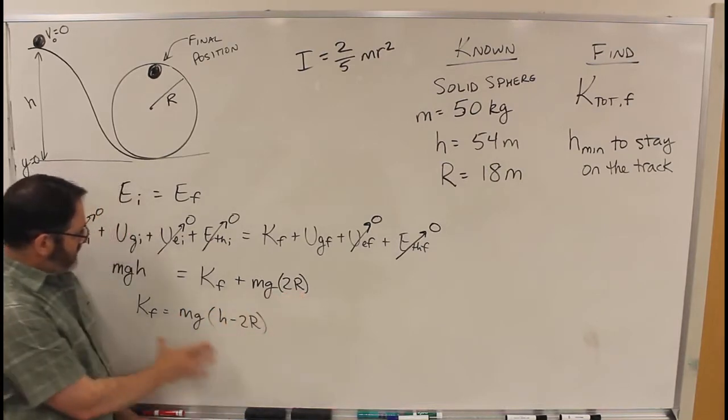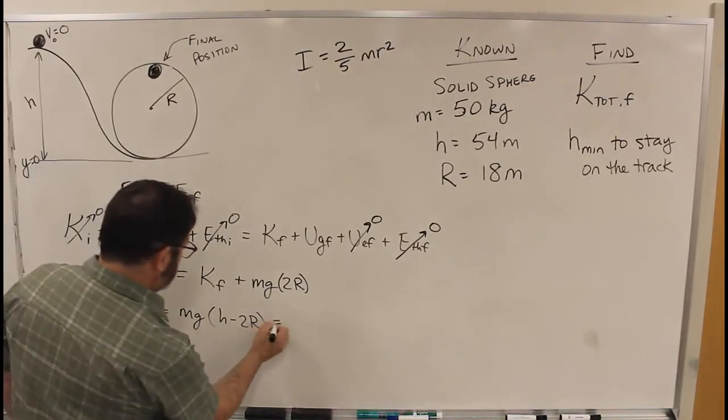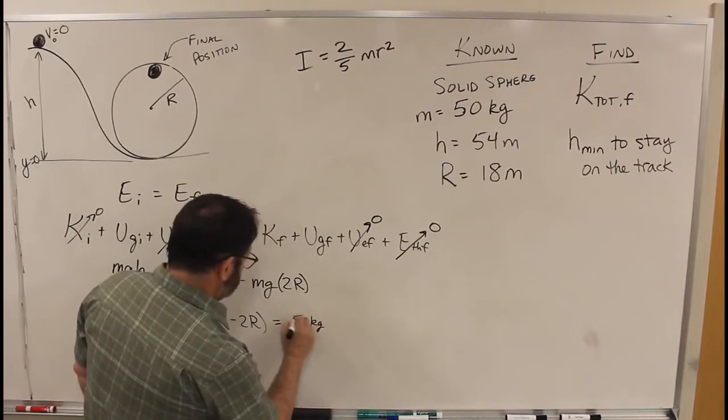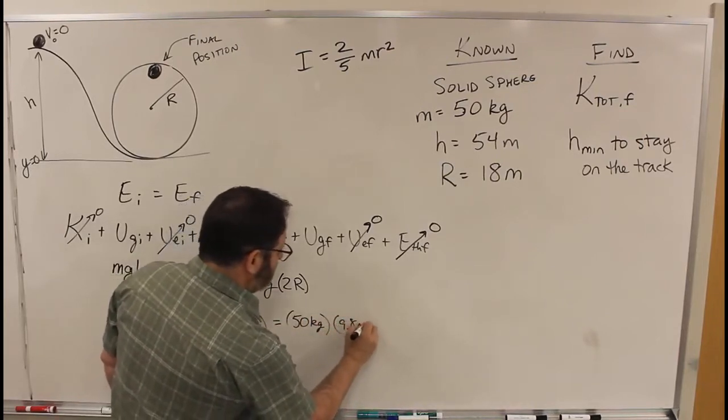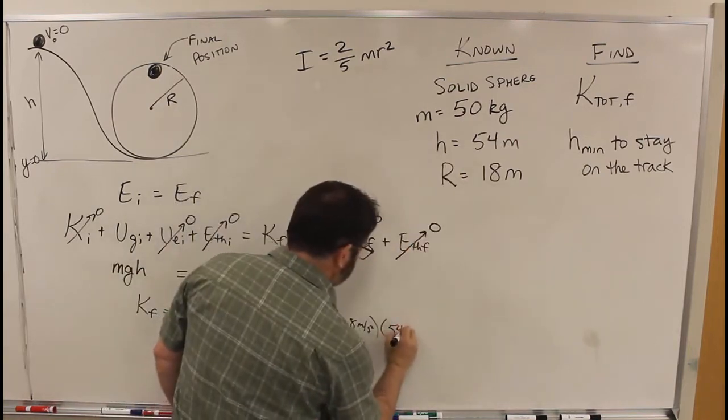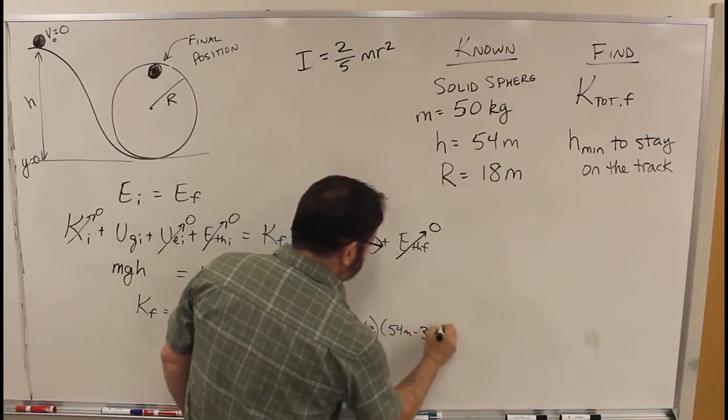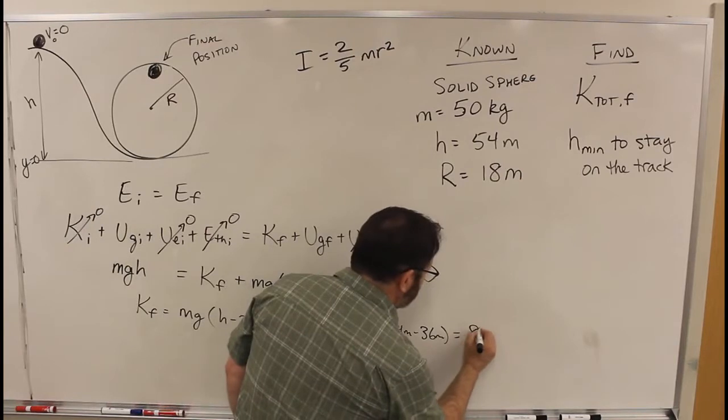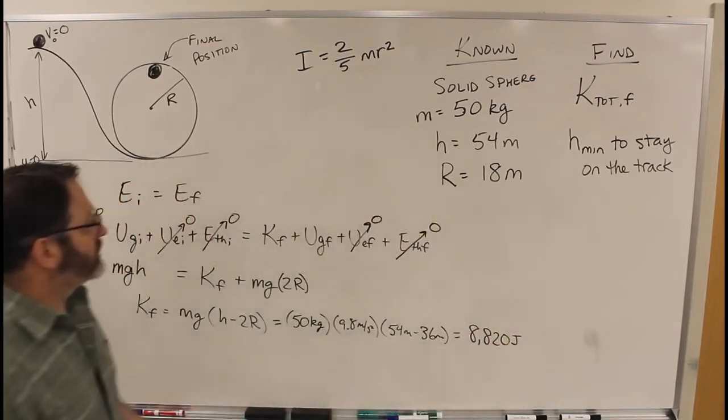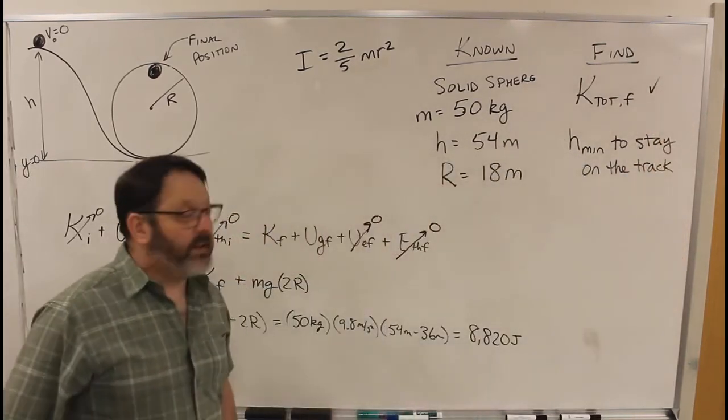So that is 50 kg, 9.8 meters per second squared, times H, 54 meters, minus 2 of those is 36 meters. 8,820 joules. Okay, that is the first one. Final total kinetic.